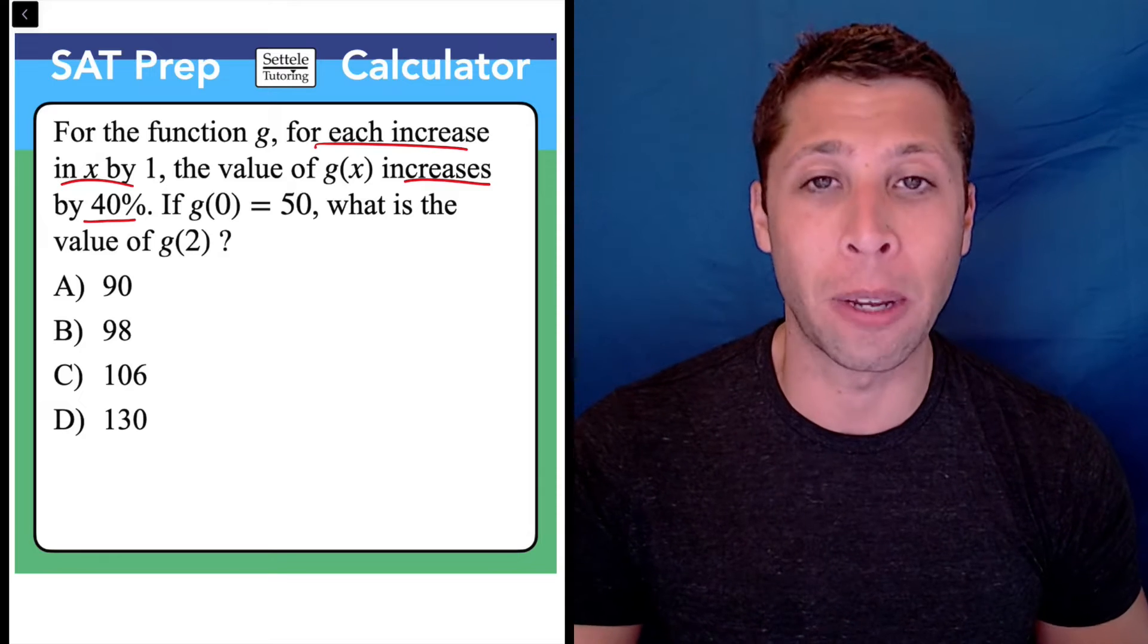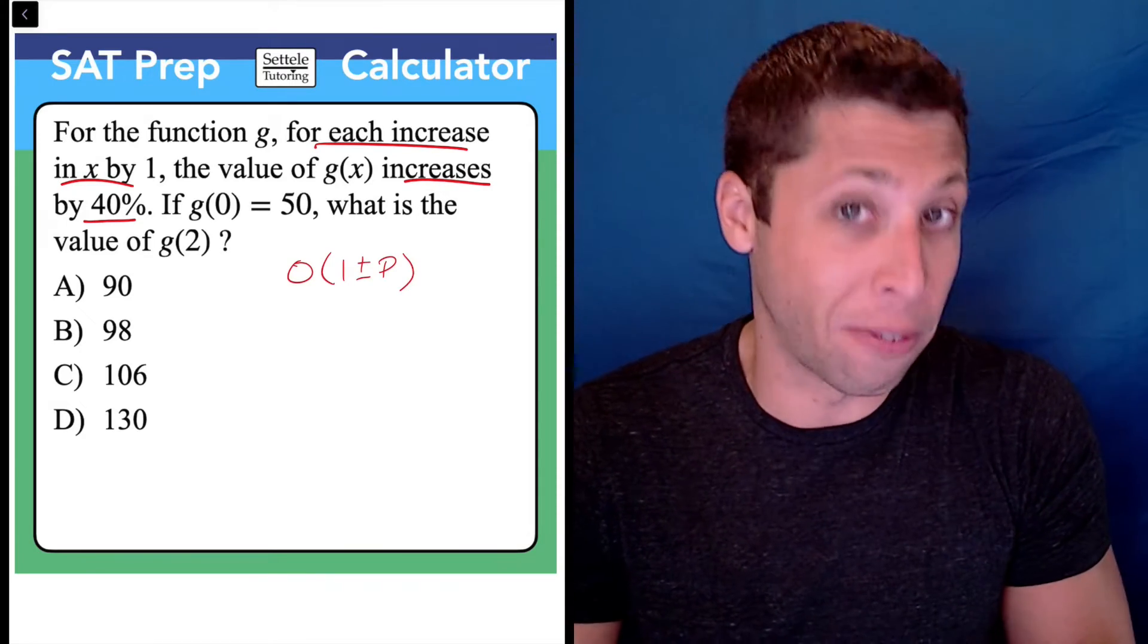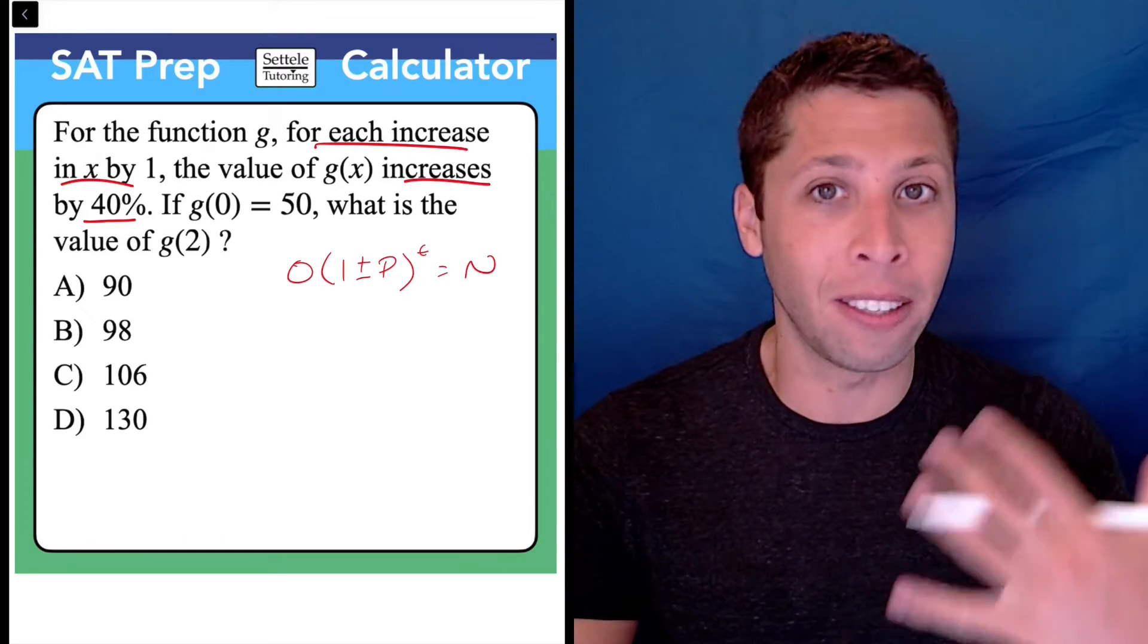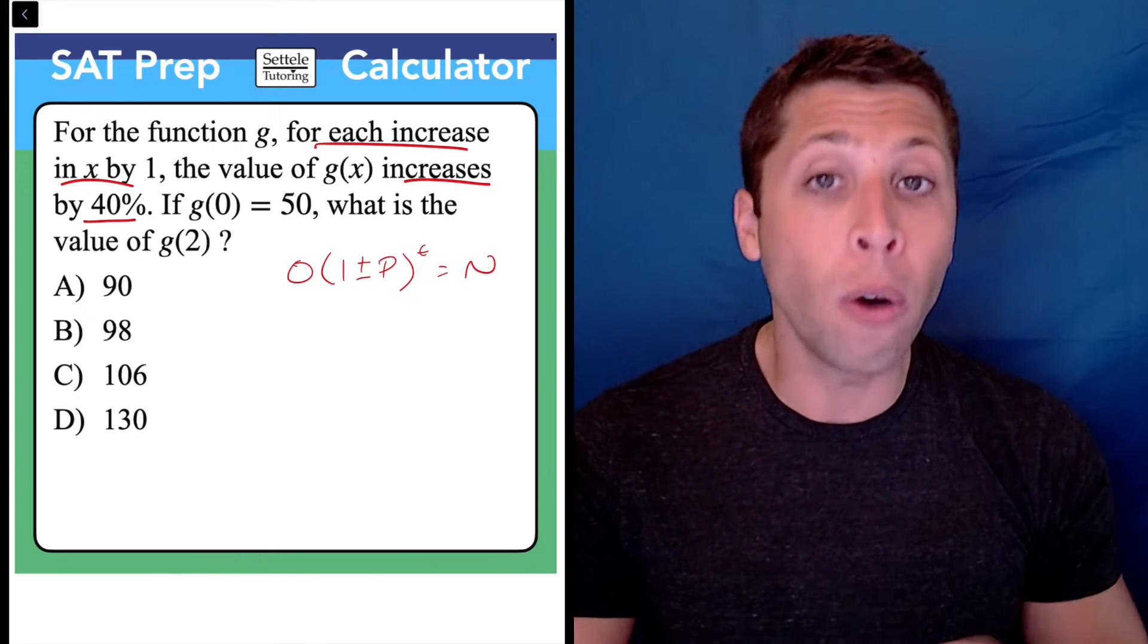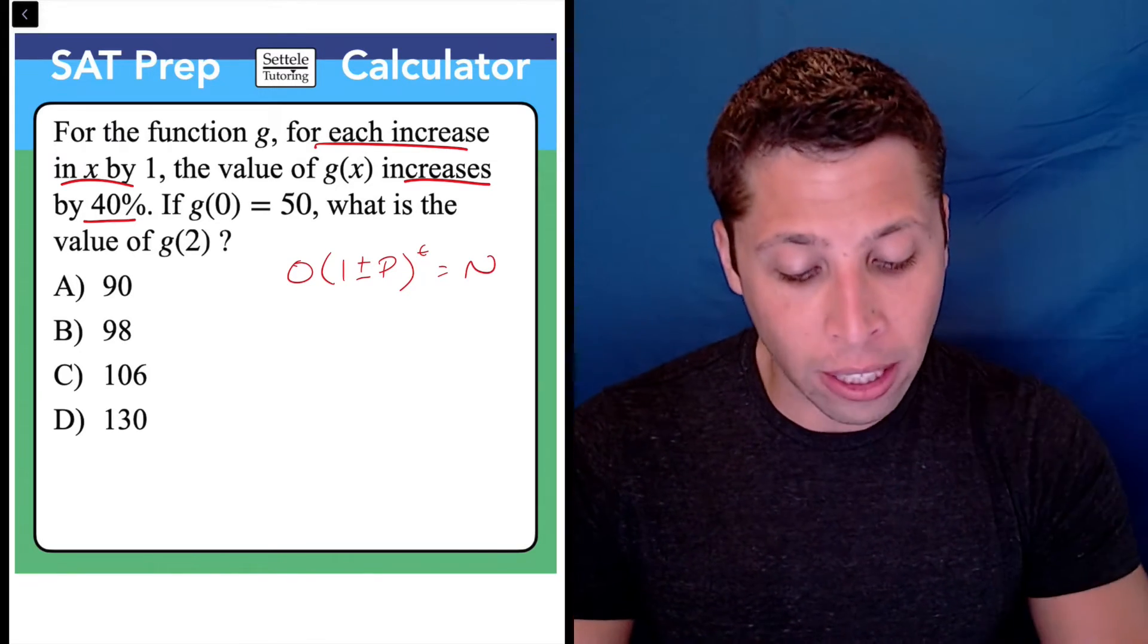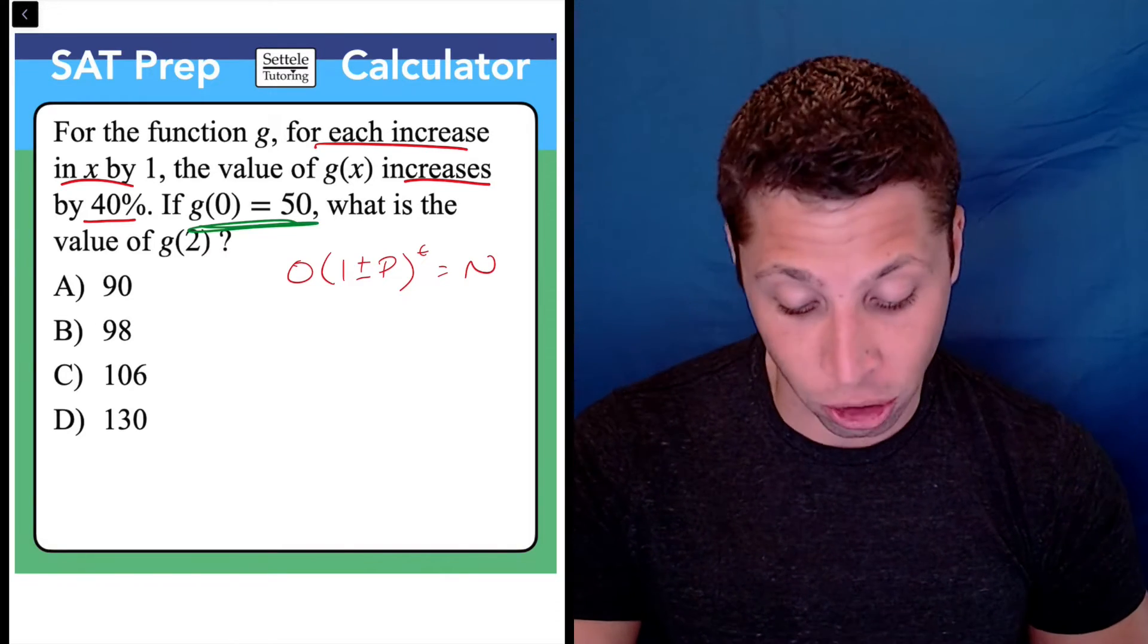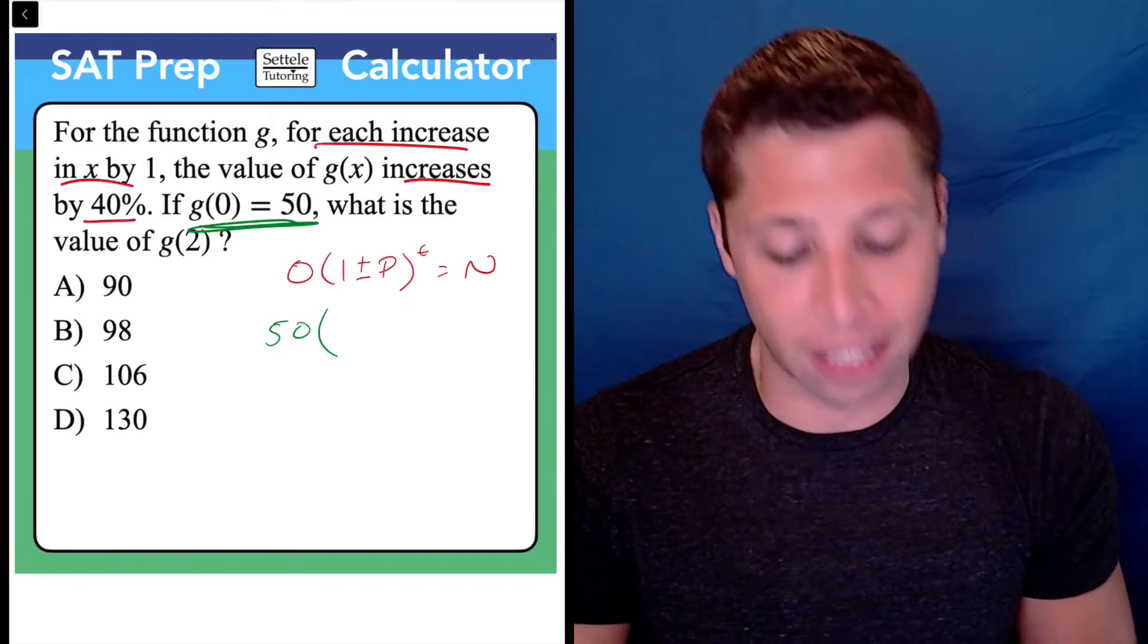We're going to use the OPEN formula to guide us and put everything into place. The OPEN formula for an exponential is a little more complicated, but it involves the same pieces we would use if we were taking a normal percentage. The O stands for the original amount, and they're giving us that in the form of a g(x) point here. g(0) = 50, so our starting number is 50.